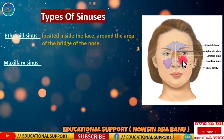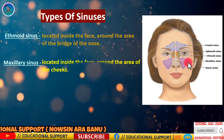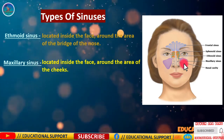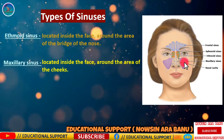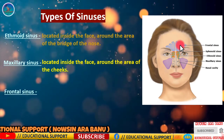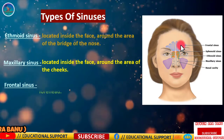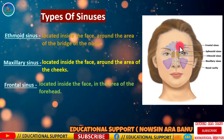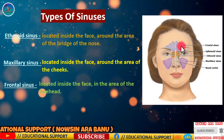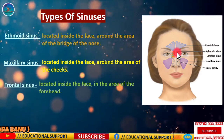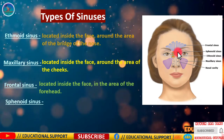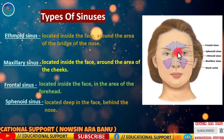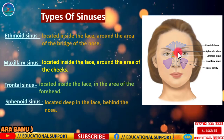The maxillary sinuses are located inside the face around the area of the teeth and are also present at birth, continuing to grow. The frontal sinuses are located inside the face in the area of the forehead and do not develop until around seven years of age. The sphenoid sinuses are located behind the nose and do not typically develop until around ten years of age.